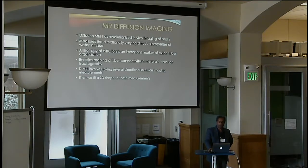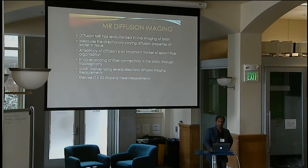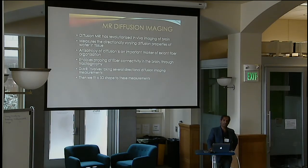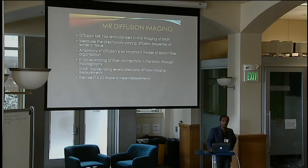To obtain structural networks, you need to know the physical wiring of the brain. Until recently this was not possible in vivo, but with diffusion-weighted MRI we are now able to do this. Diffusion MRI measures the propensity of water molecules trapped within brain tissue to diffuse in one direction or another. Once you know the directional preference of diffusion, you can infer that there was a fiber bundle there, because water doesn't like to diffuse across fibers — it likes to diffuse along them.